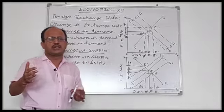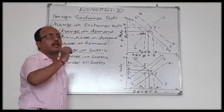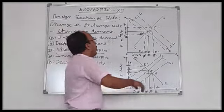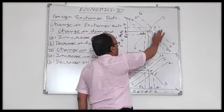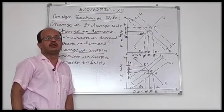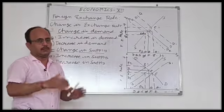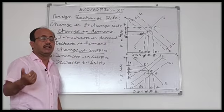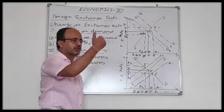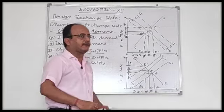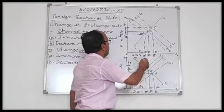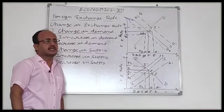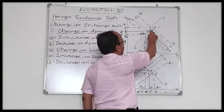Now, with certain reasons, suppose demand increases. As demand increases, the demand curve shifts from DD and changes to D1D1, meaning it shifts to the right-hand side.